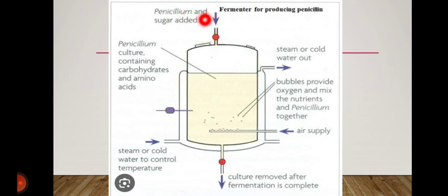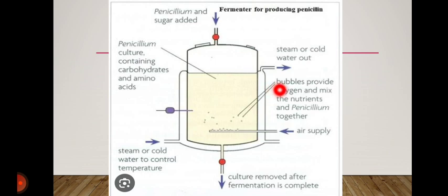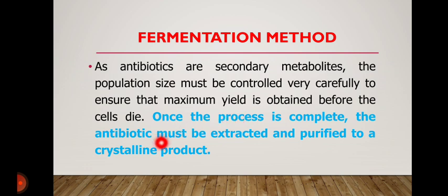Looking at this picture of the fermentation setup: Penicillium notatum and sugar are added from the top inlet point. This is the penicillin culture containing carbohydrate and amino acids. Steam or cold water is injected at one point and taken out at another point. Air is supplied from below, producing bubbles as carbon dioxide comes out from the conversion of sugar. The culture is then removed from the bottom, and by extraction and purification methods, the crystalline product is isolated.